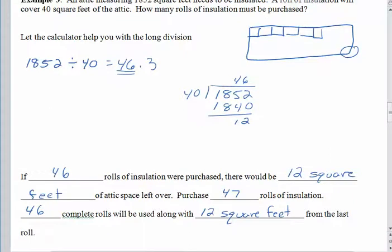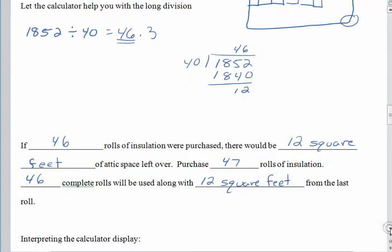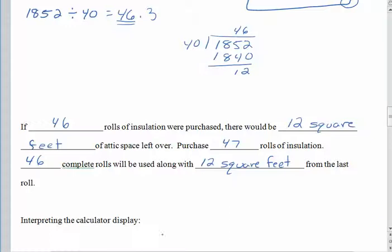So what we really have to do is cover the whole attic, which means we have to purchase 47 rolls of insulation. You certainly couldn't purchase 0.3 rolls of insulation, and 46 is not going to be enough. 46 of those complete rolls get used, along with 12 square feet from the very last roll. Alright. So one more time, let's go back and look at the calculator display, which told us 46.3. What does that really mean?